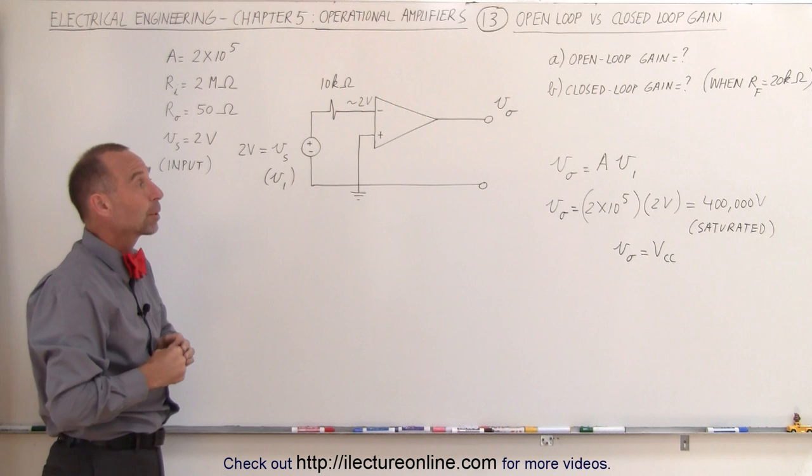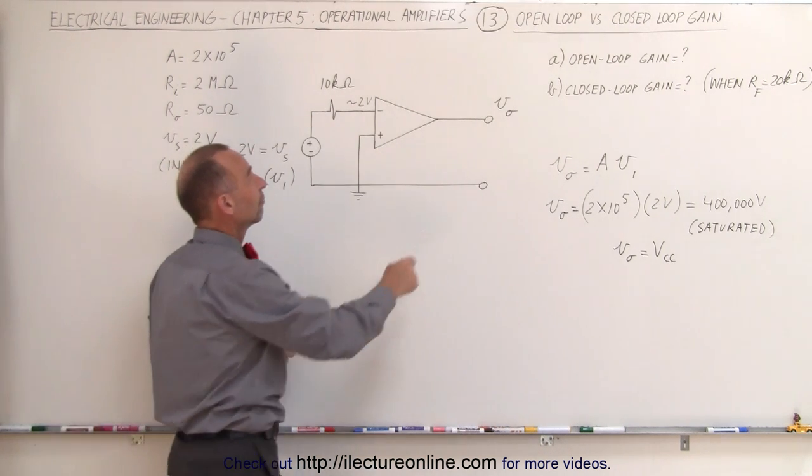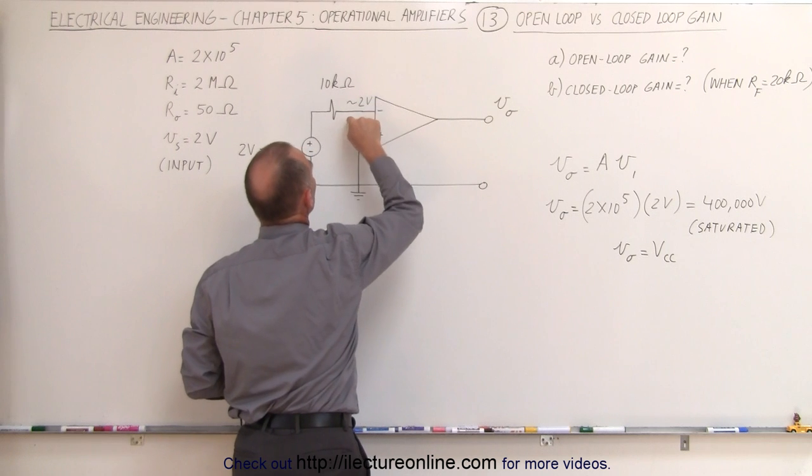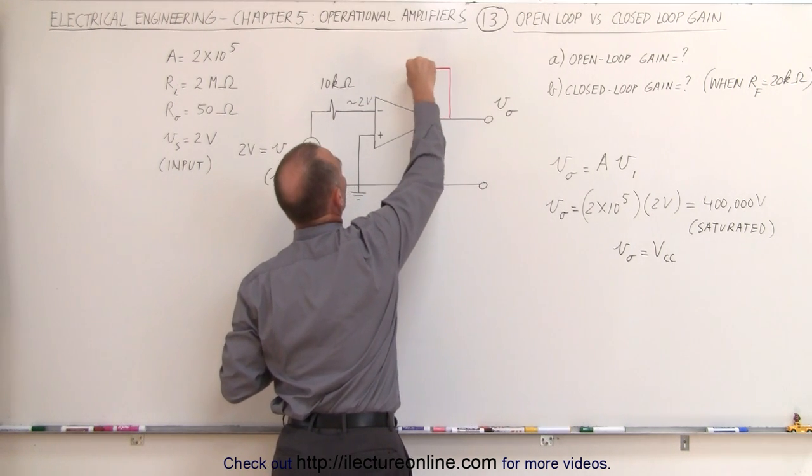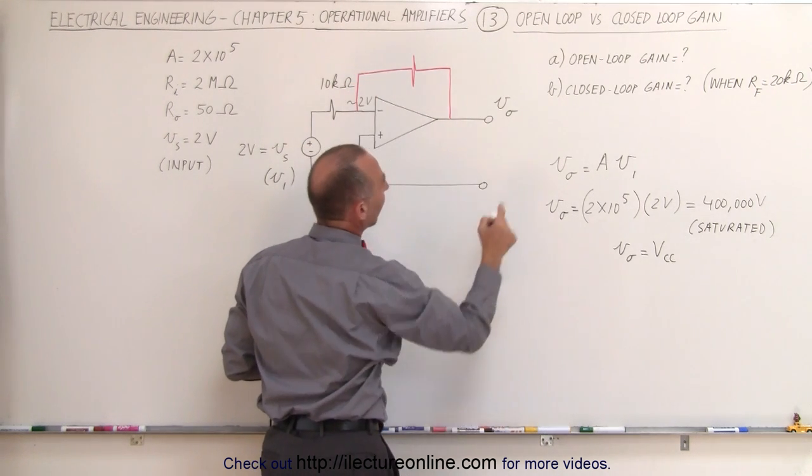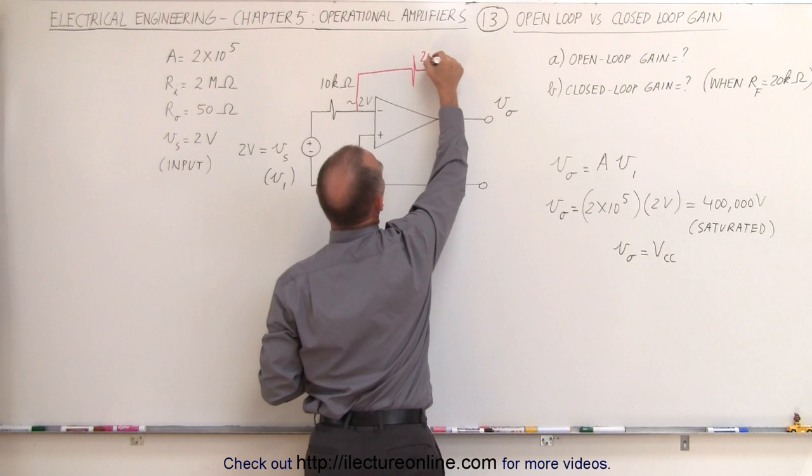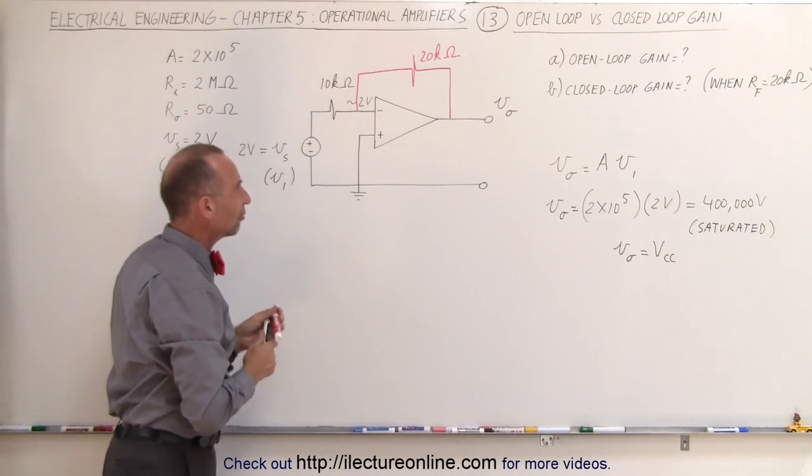What about the closed loop gain? Well in the case of the closed loop gain we need to have a feedback resistor from the output voltage back to the inverting terminal so then we're going to have to add a resistor here like this, there we go. And they tell us that the resistor is going to be 20 kilo ohms which means that in this case for part b